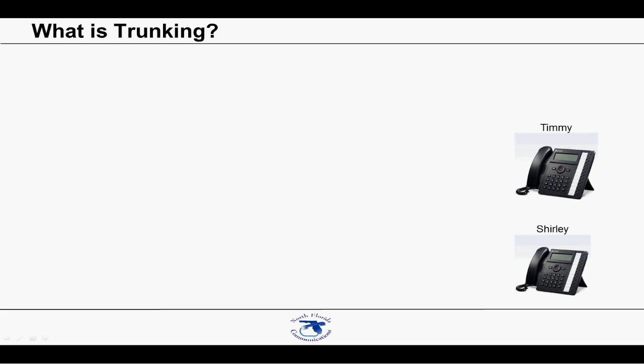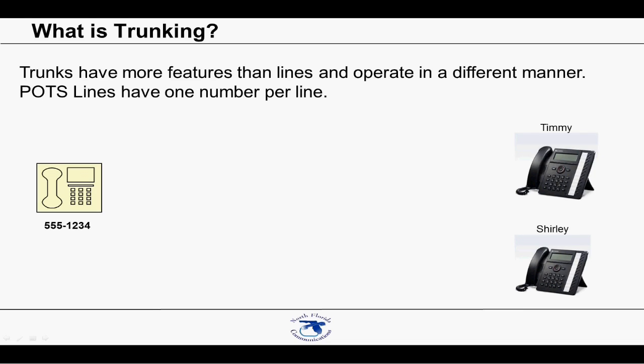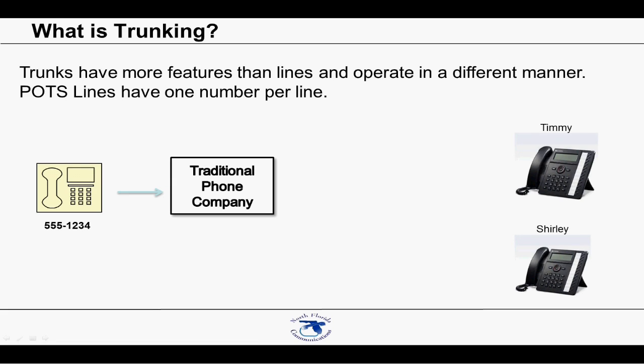Why is it called SIP trunking instead of SIP lines? Trunks have more features than lines and operate in a different manner. Plain old telephone service, or POTS lines, have one phone number per line, and each line comes in from a pair of wires from the phone company. For example, if your phone number is 555-1234, when someone calls that number, it is sent via the public switched telephone network to your phone company's local central office. The call is then sent over a pair of copper wires to your building and goes to your phone system, which has been programmed to send all calls coming in on that line to a certain destination — in our example, it's going to Timmy.